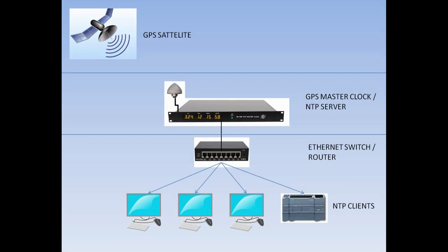Hello friends, welcome to Stable Automation. This is a typical GPS time synchronization architecture where a time frame from a GPS satellite is received by an NTP server or a GPS master clock, then it is distributed via Ethernet or router through various devices across the plant, including computers, PLCs, HMIs, and any other devices that can be synchronized with the NTP server.